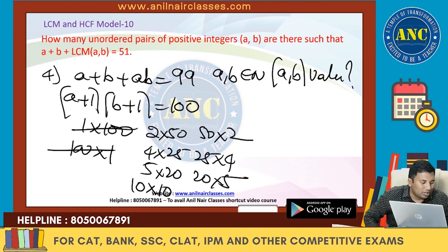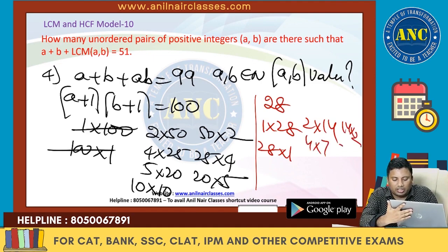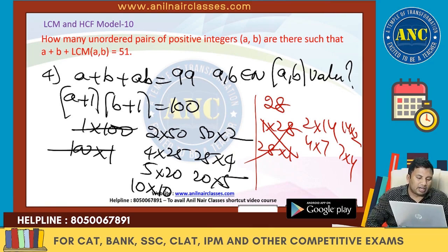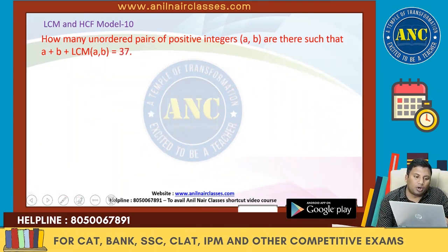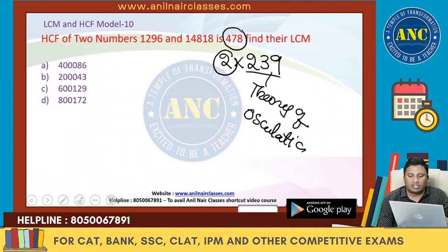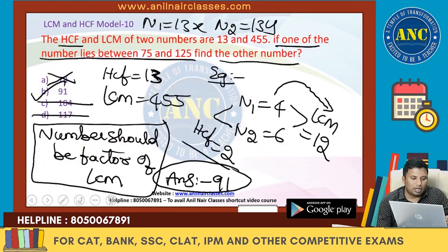For value 28: factor pairs are 1 into 28, 28 into 1, 2 into 14, 14 into 2, 4 into 7, 7 into 4 — those cases are eliminated. The idea is clear. Tomorrow I will explain another logic of co-primes, which will take half an hour. I hope this idea is also clear — answer options approaches, divisibility approaches, I hope everything is clear to you.